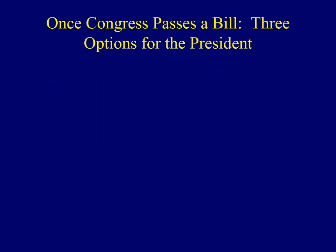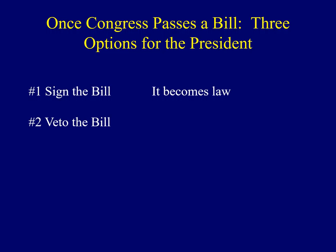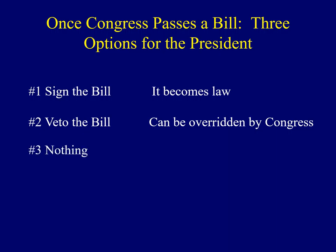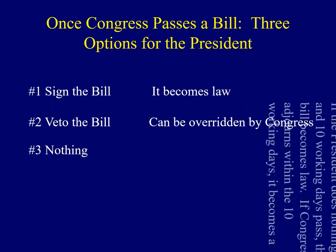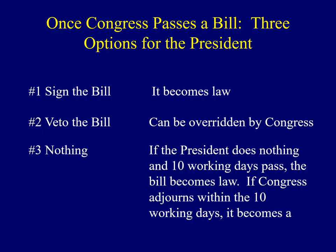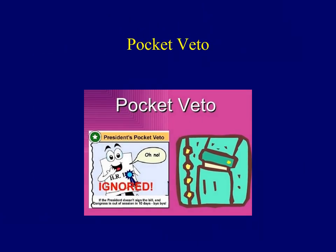This is a bit of a review, but I want to address the president's role with lawmaking. Once Congress passes a bill, there are three things the president can do. First, sign the bill and it becomes law. If the president is opposed, he can veto the bill, but that veto could be overridden by Congress. If the president does nothing and 10 working days pass, the bill becomes law even without the president's signature. But if Congress adjourns within those 10 working days, it becomes a pocket veto — and a pocket veto cannot be overridden by Congress.